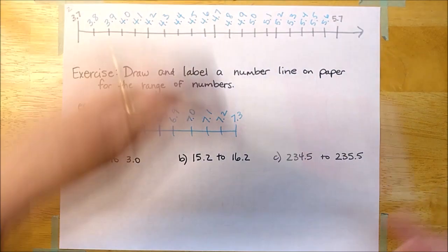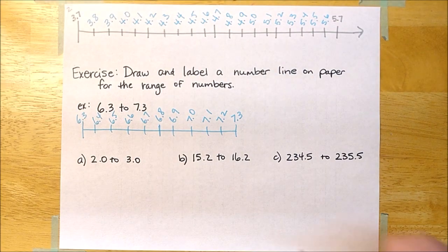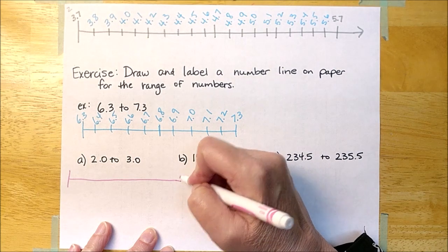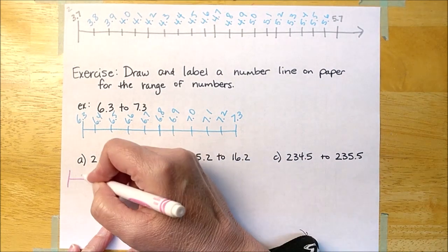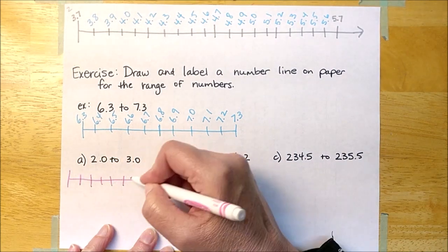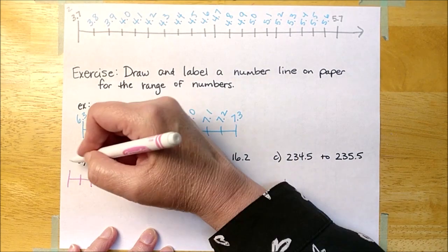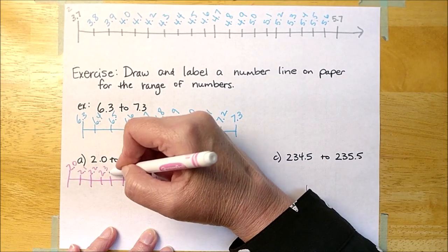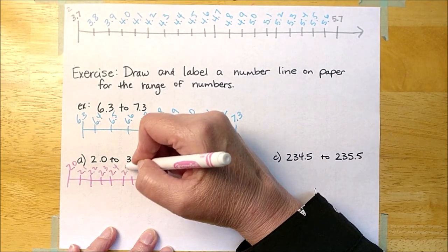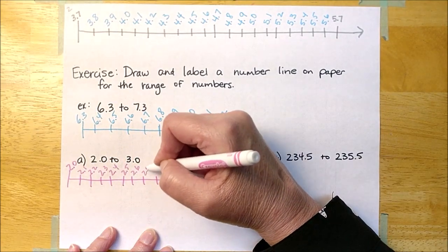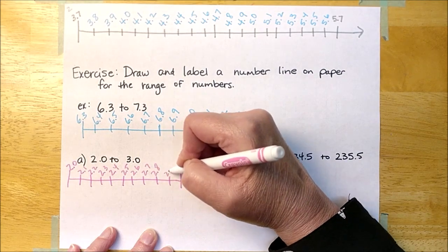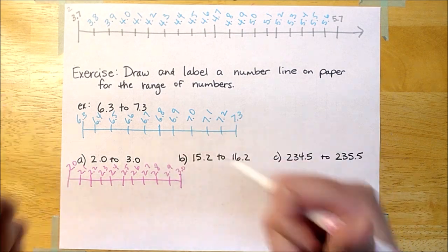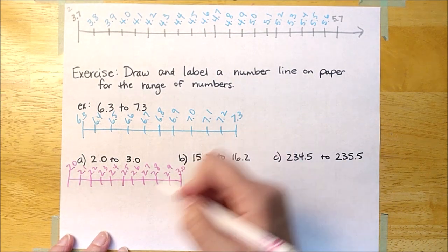Okay, you're back — awesome! So now we're going to draw this number line. One, two, three, four on each side. This is two point zero, two point one, two point two, two point three, two point four, two point five, two point six, two point seven, two point eight, two point nine, three. I hope you got that right on your paper.